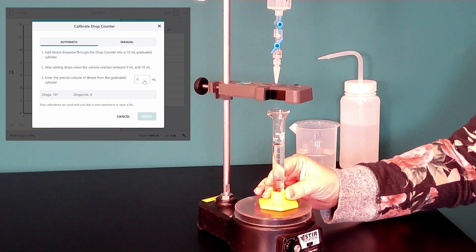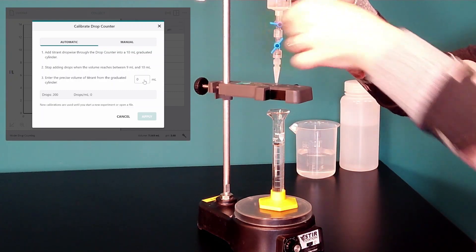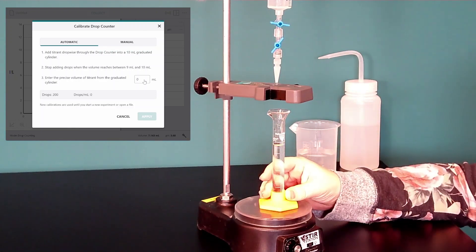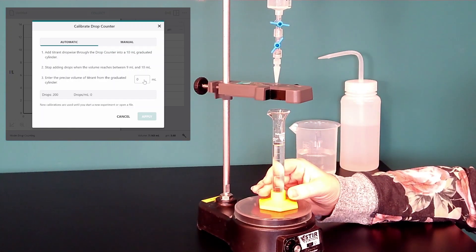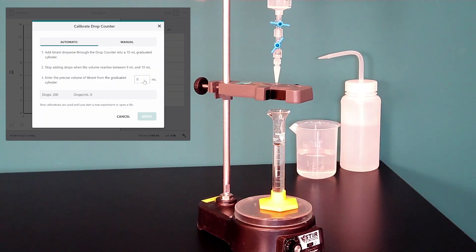Now that I've gotten between 9 and 10 milliliters in my graduated cylinder, I can stop the drops by turning the valve and now I'm going to read the volume. It's 9.2 milliliters.